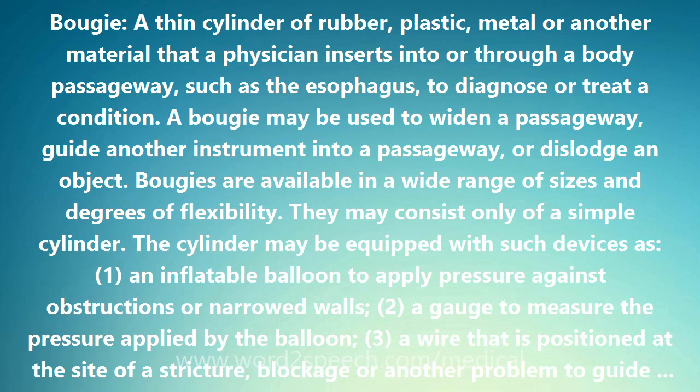Bougies may be used to treat strictures and blockages in the esophagus, the intestines, the rectum, the anus, the ureters (the tubes that transport urine from the kidneys to the bladder), and the urethra (the canal that transports urine from the bladder to the outside). A stricture is an abnormally narrow section of a passageway, while a blockage is an obstruction within a passageway.